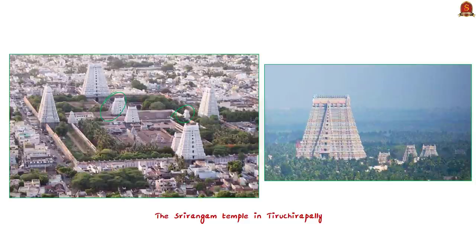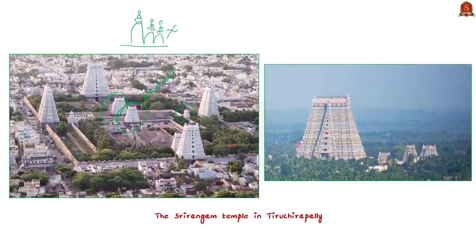The North Indian idea of multiple shikaras rising together as a cluster was not popular in South India. Interestingly, at some of the most sacred temples in South India, the main temple housing the Garbhagriha has one of the smallest towers. This is because it is usually the oldest part of the temple — with the passage of time, the population and size of the associated town increased, necessitating new, taller boundary walls with loftier gopurams.